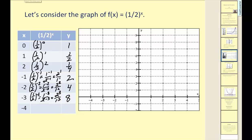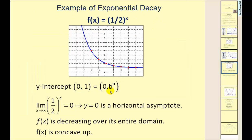Let's plot these points: (0, 1) — same y-intercept as before — then (1, 1/2), (2, 1/4), (−1, 2), (−2, 4), (−3, 8). We can see this function goes downhill from left to right, so we classify it as exponential decay. Key properties: y-intercept of (0, 1), the limit as x approaches positive infinity equals zero giving a horizontal asymptote of y equals zero, it's decreasing over its entire domain, and it is concave up.